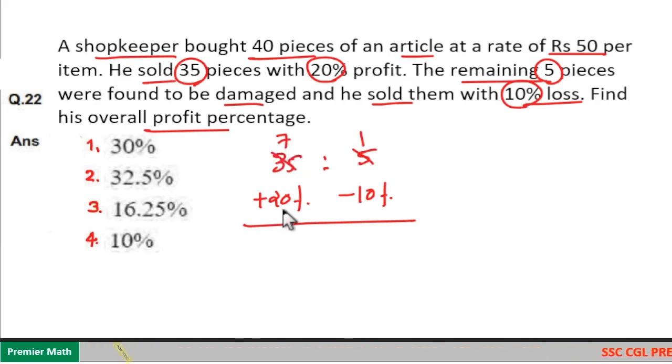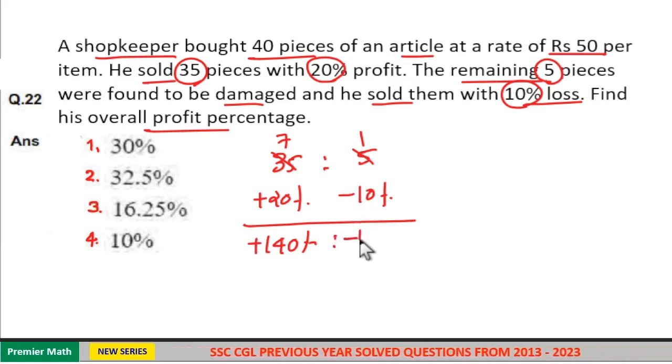Now 7 into 20 is equal to 140 percentage. This is profit. And here 1 into minus 10 is equal to minus 10 percentage.